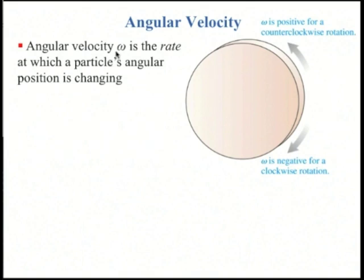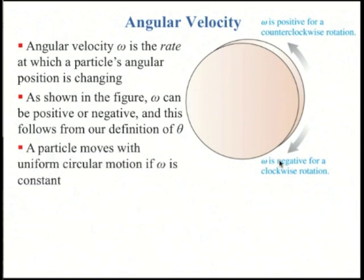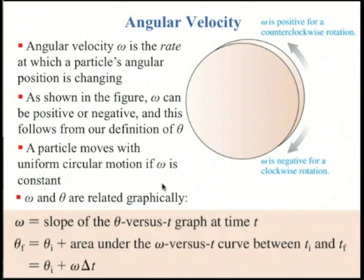Angular velocity omega is the rate at which the particle's angular position is changing. Since theta increases going counterclockwise, omega is positive for counterclockwise rotation and negative for clockwise rotation. A particle has uniform circular motion if omega is constant. If you graph theta versus time, omega is the slope. If you graph omega versus time, the area under the curve gives the change in angular position: theta final equals theta initial plus omega times delta t.